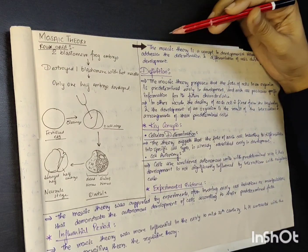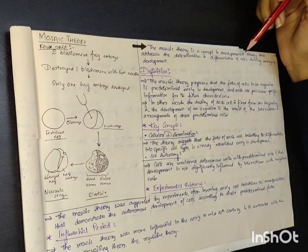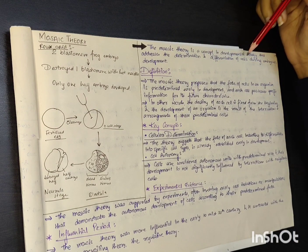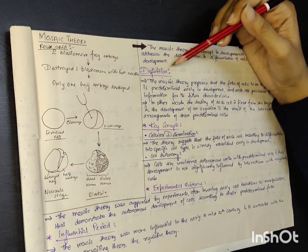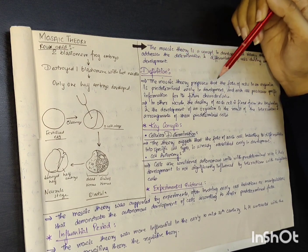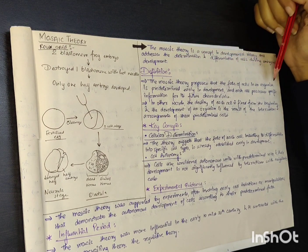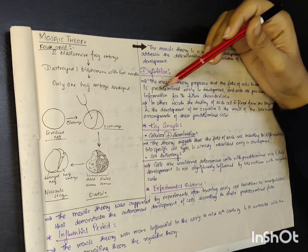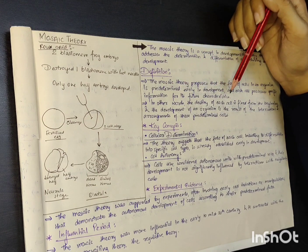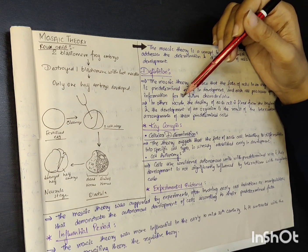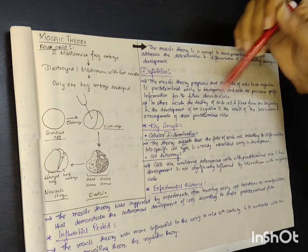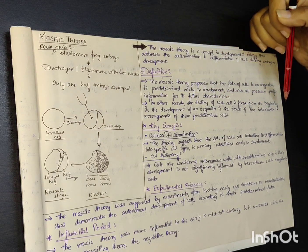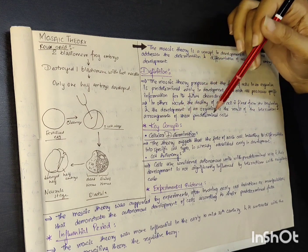Mosaic theory is a concept in developmental biology that addresses the determination and differentiation of cells during embryonic development. The mosaic theory proposes that the fate of cells in an organism is predetermined early in development and each cell possesses specific information for its future characteristics. In other words, the destiny of each cell is fixed from the beginning and the development of an organism is the result of the interaction and arrangements of these predetermined cells.